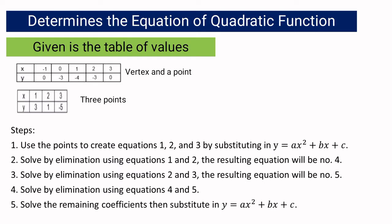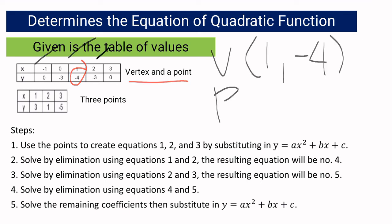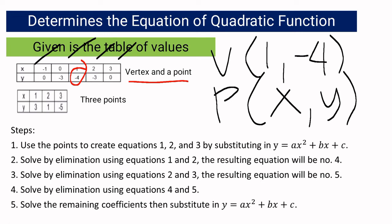Lastly, what if the given is the table of values? If the table of values shows a repeating y-value pattern with a clear minimum or maximum, we can identify the vertex directly and then use the vertex and a point, just like what we did earlier.